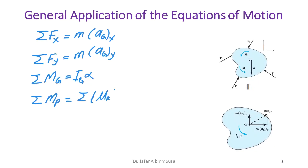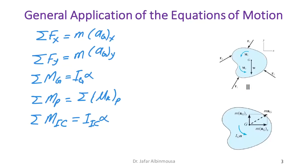We might also have an IC — the instantaneous center of zero velocity — and sum the moments around it, giving I_IC·α.